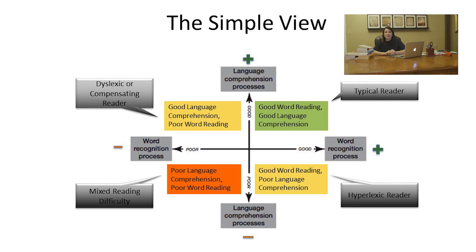If you want more explanation on compensating readers, check that out. In the lower left corner, students have difficulty with both components required for reading comprehension — poor language comprehension and poor word reading. So now we see that the simple view can help us understand why a student's reading comprehension isn't where it should be for their grade level. We can go back to the simple view and see what it means for instruction.